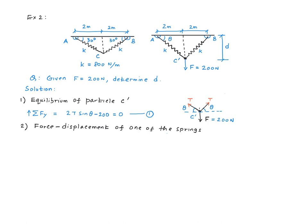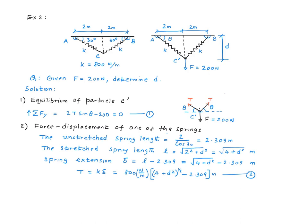The first part of the solution is essentially the same as what we did before except we don't know this angle this time. Let's call this theta. But we do know the force. Therefore the equilibrium equation for particle C prime is this. As before, our equation number two comes from the force-displacement relation for one of the two springs. This is somewhat complicated. The original unstretched length of the spring is 2.309, which is 2 over cosine 30.